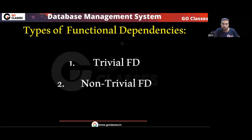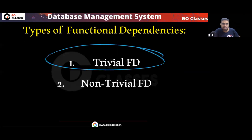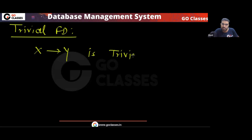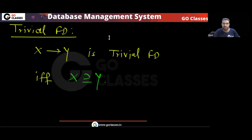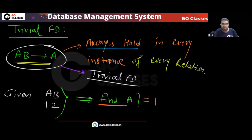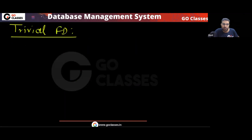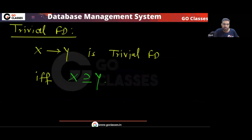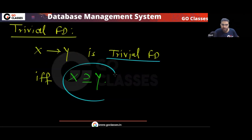There are two types of functional dependency: trivial functional dependency and non-trivial functional dependency. What is trivial functional dependency? X determines Y is a trivial functional dependency if and only if X is a superset of Y. For example, A → A is trivial because A is a superset of A. This is the definition of trivial functional dependency.